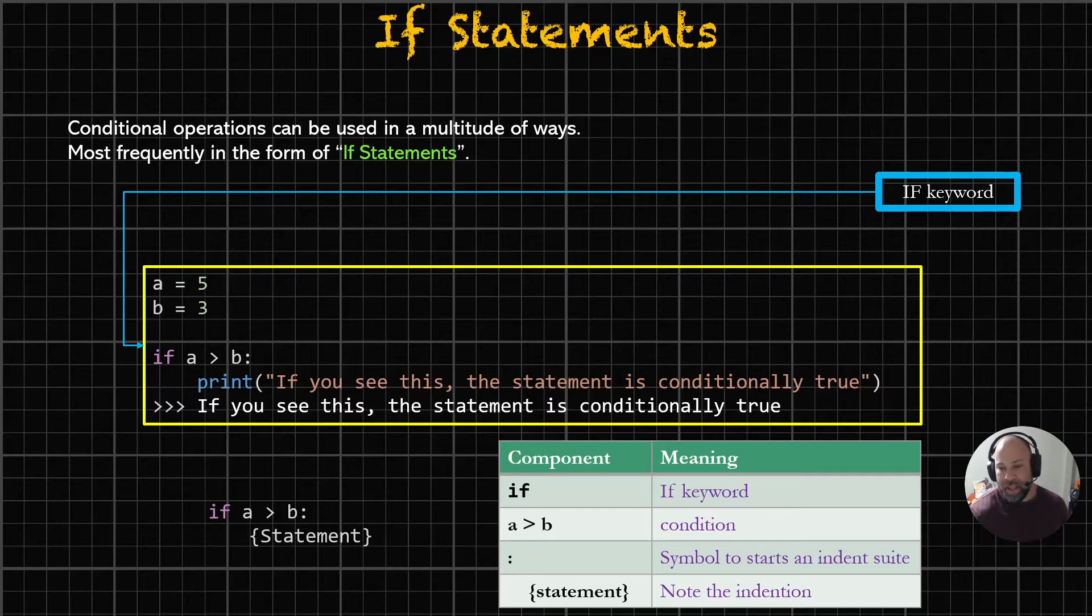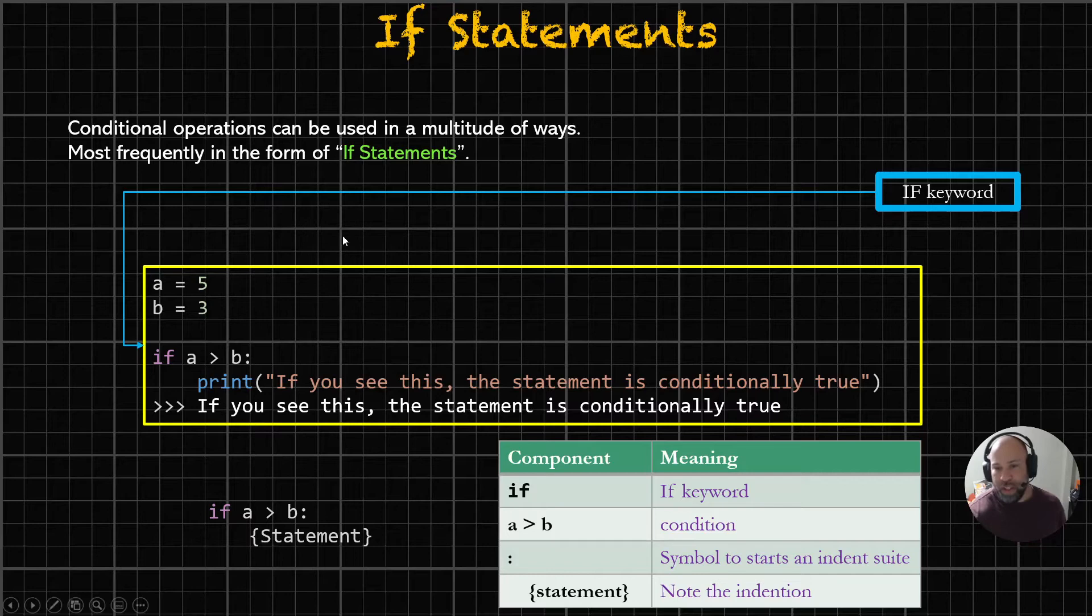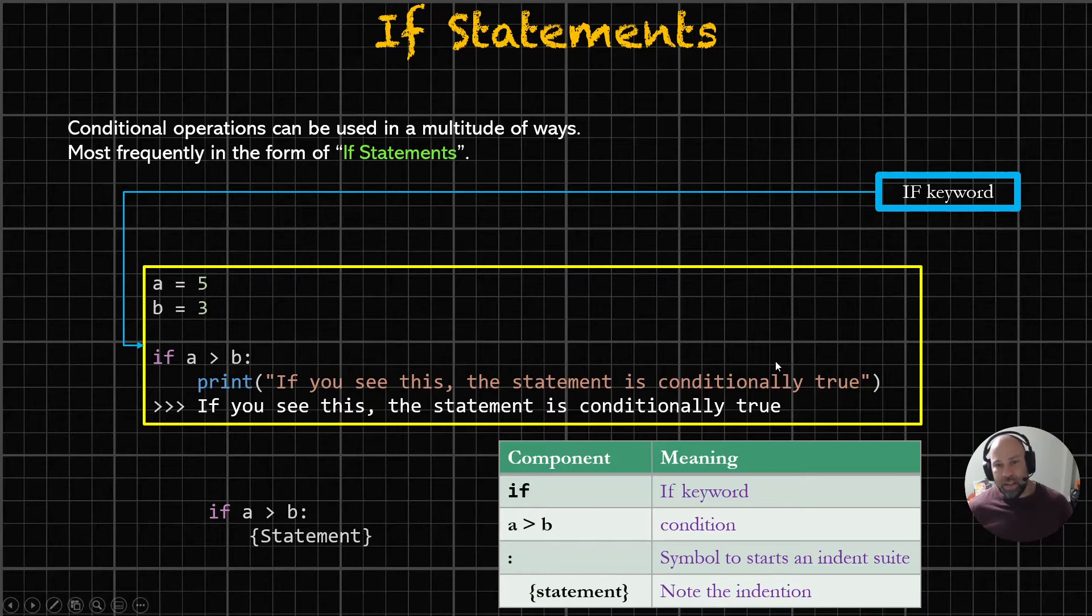These are the parameters for which we can evaluate whether a decision-making process is going to return true or false. And we use the colon to start an indention sweep, just like you'll see with functions and other items in Python. And then, if that condition is true, if those parameters return true, whatever happens in the indention, or whatever appears in the indention is what's going to happen. That's what's going to run. So in this scenario, we're going to say if a is greater than b, then print to standard output, if you see this, the statement is conditionally true. That's exactly right. That's what happened.